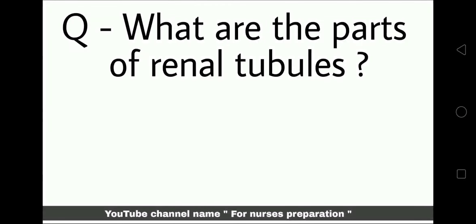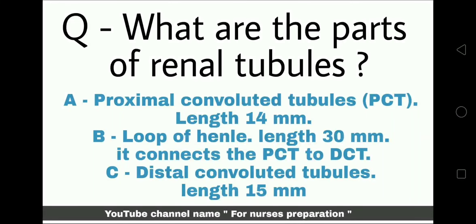What are the parts of renal tubules? The renal tubules are made up of 3 important parts: Part 1 — Proximal Convoluted Tubules, known as PCT, with a length of 14 mm. Part 2 — Loop of Henle, with a length of 30 mm, which connects the PCT to the DCT. Part 3 — Distal Convoluted Tubules, known as DCT, with a length of 15 mm.